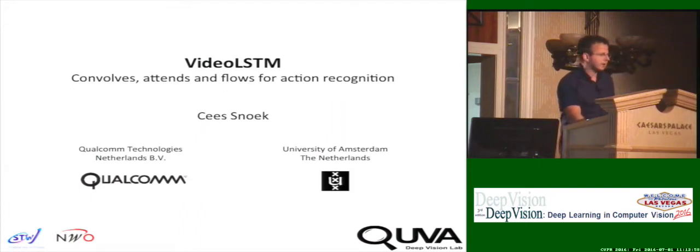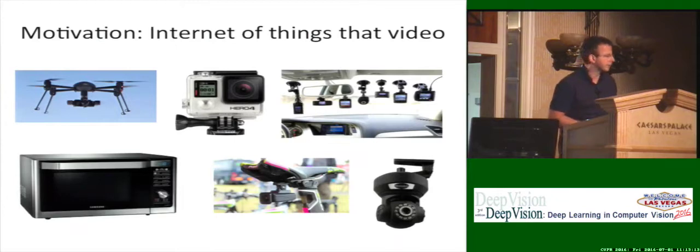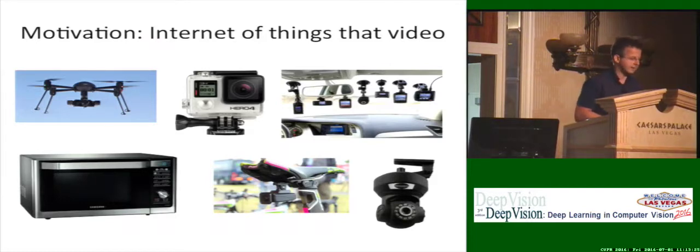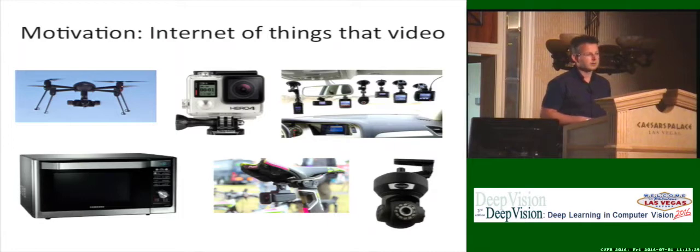I will start by arguing that a video tsunami is ahead of us. This is not only caused by the huge amounts of social media and videos we are sharing on Facebook, YouTube and Periscope, but there's also another development going on. It's basically the Internet of Things, where all kinds of devices and robots are equipped with a video camera. So these are not only drones and cars, but any device can have such a camera.